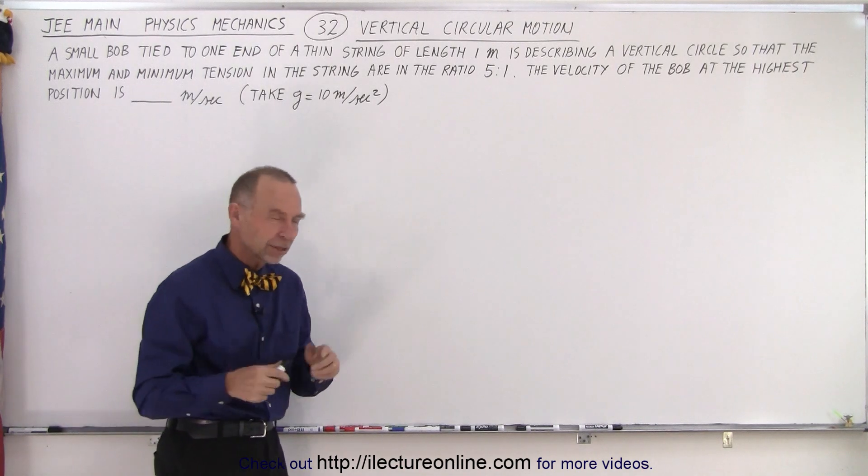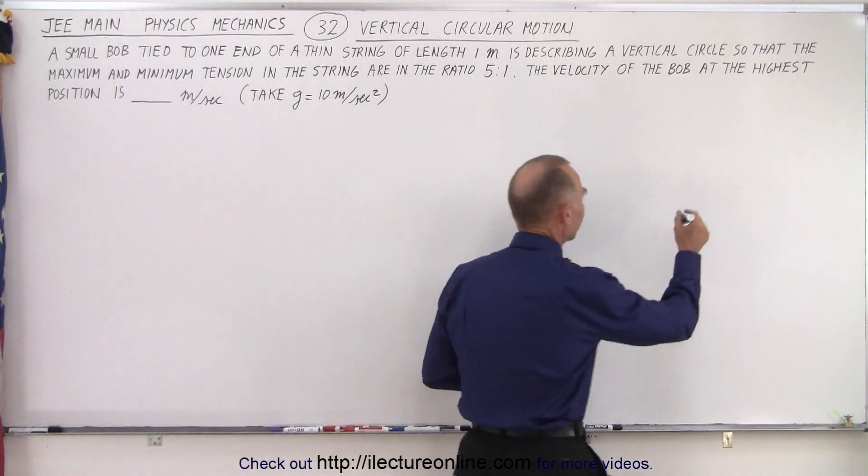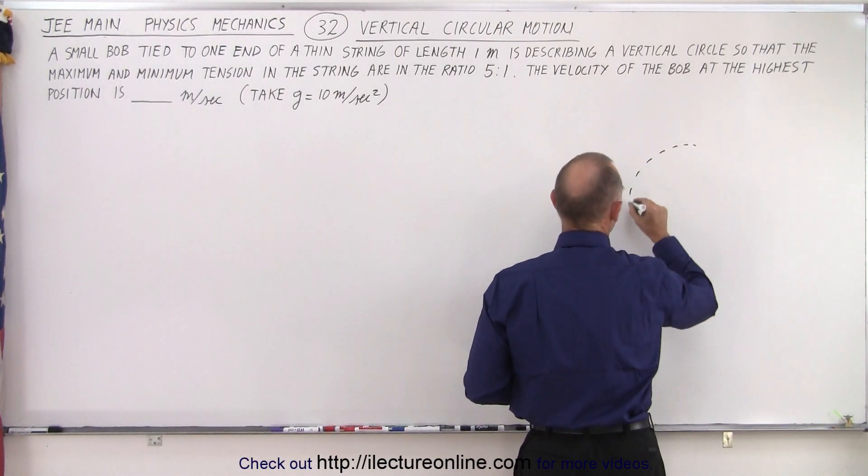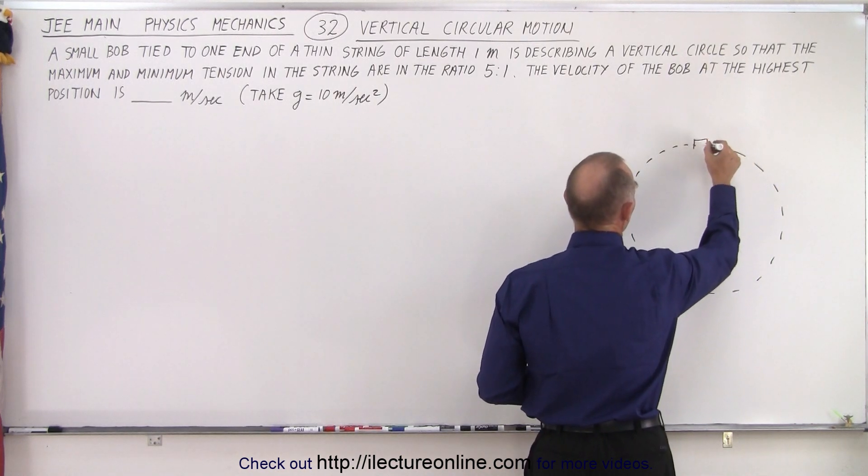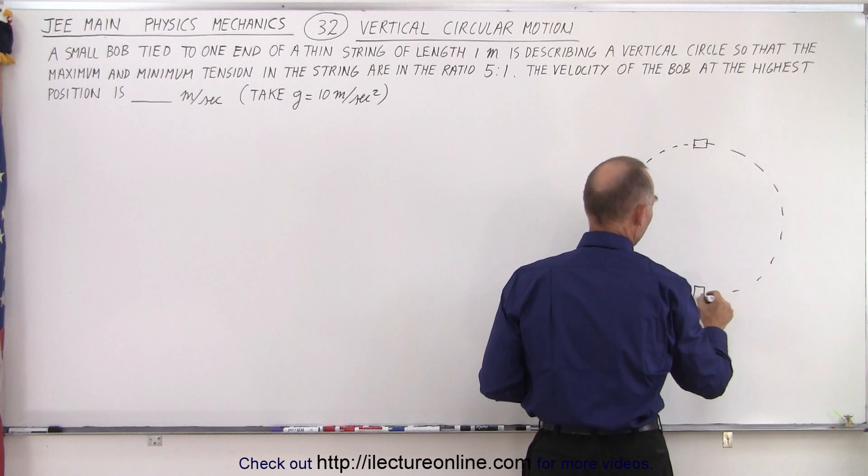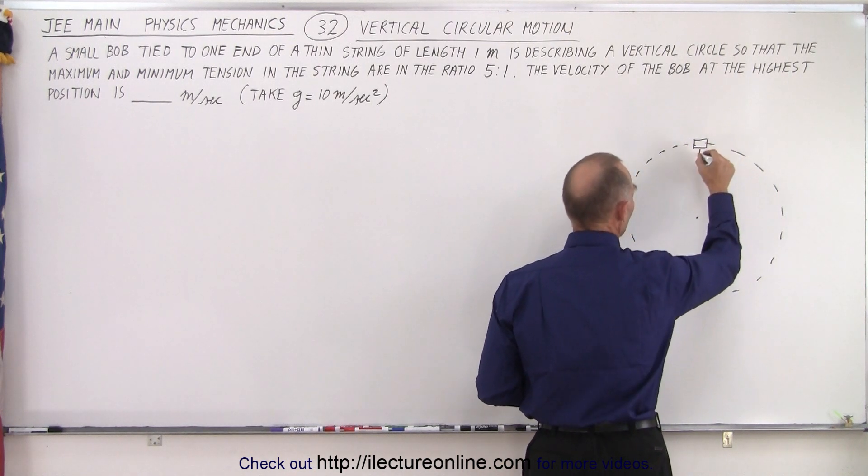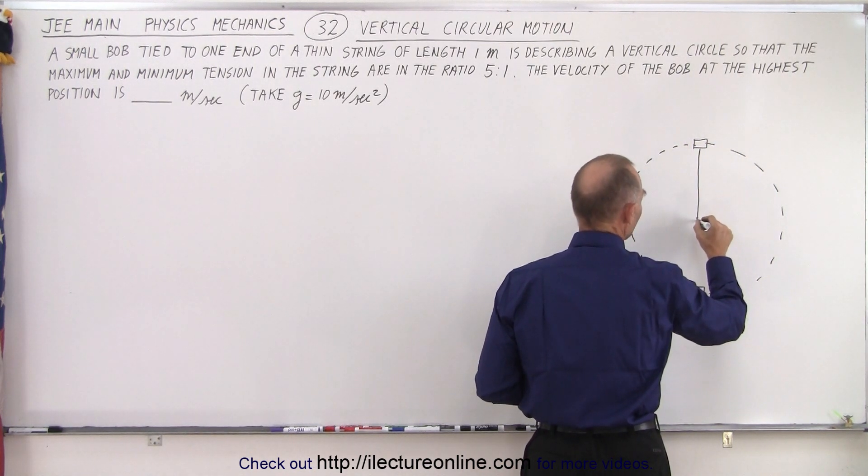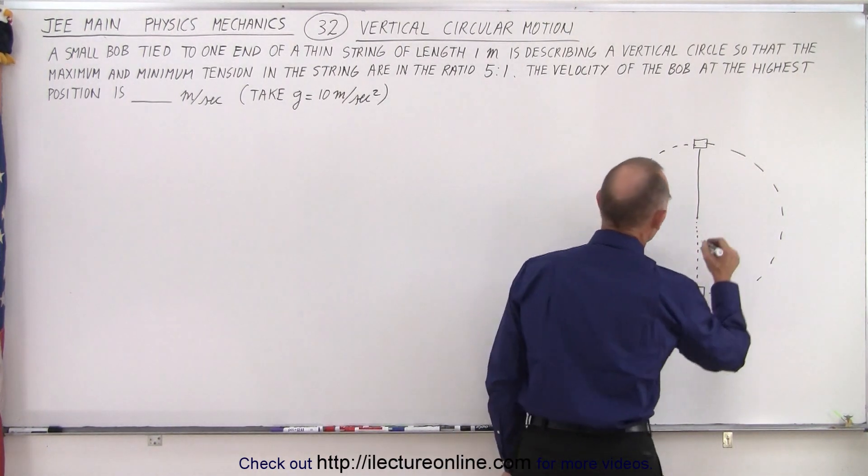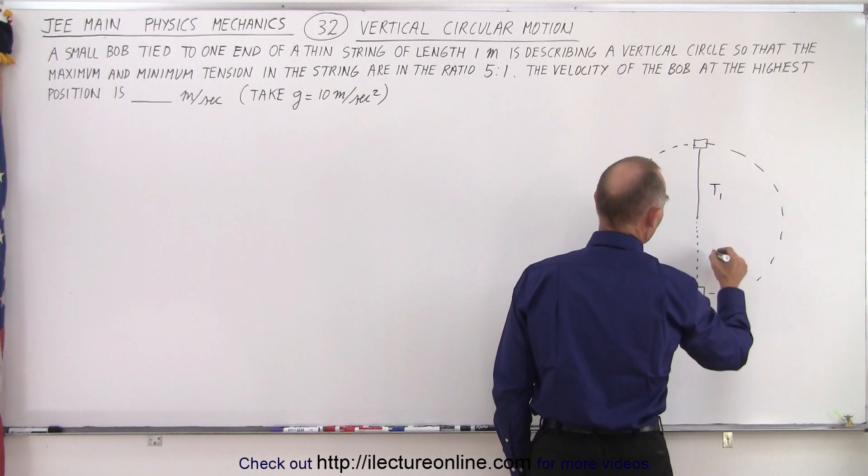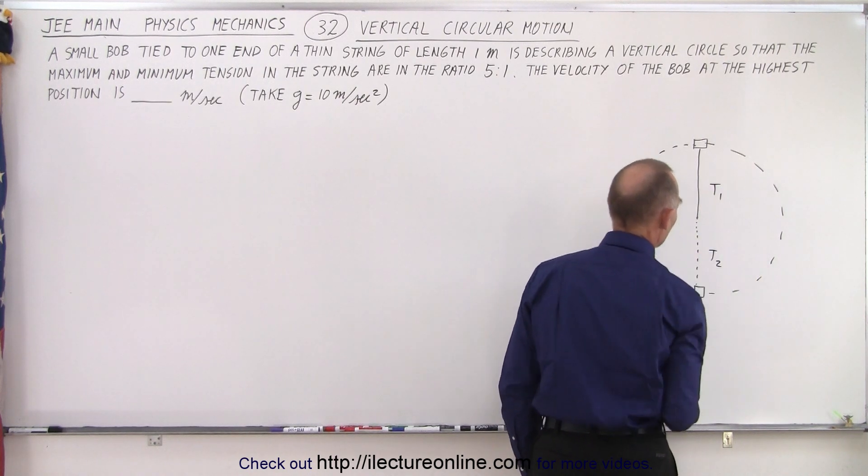So let's make a drawing of the situation to see what we're dealing with here. So we have a bob that's going around in a vertical circle, so sometimes the bob is at the top and sometimes the bob is at the bottom. There's a center, it's attached to a string. Now let's say that this is tension one and let's say that this is tension two in this position.